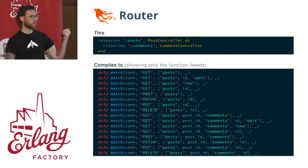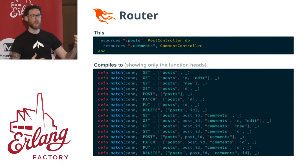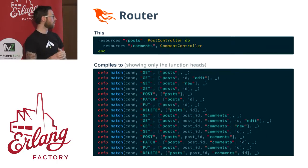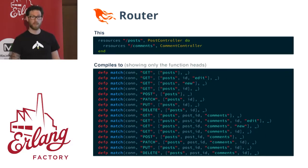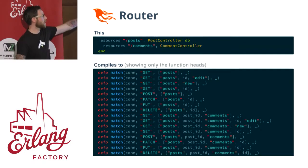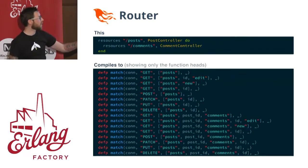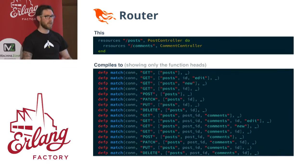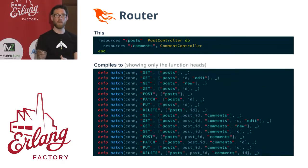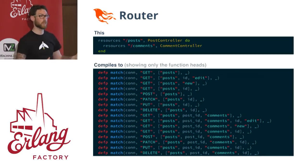The router itself — those resources are macros, and macros allow us to, at compile time, generate functions for you that will make things so much easier. This ends up turning into these function heads. Since it's at compile time, at runtime the Erlang virtual machine will just do pattern matching on the function itself, pick the right one, and route you to it.